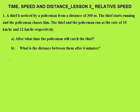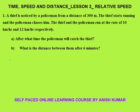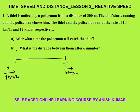This is the first question. A thief is noticed by a policeman from a distance of 300 meters. The thief starts running and the policeman starts chasing him. The thief and the policeman run at speeds of 10 km per hour and 12 km per hour respectively. These kinds of questions we can solve in less than 30 seconds. First, I am making a diagram. The thief is moving at 10 km per hour and the policeman is moving toward the thief at 12 km per hour. The gap between them is 300 meters.